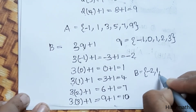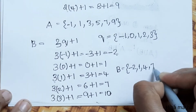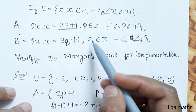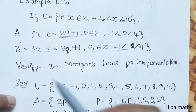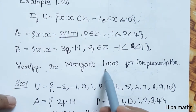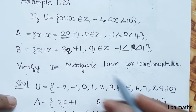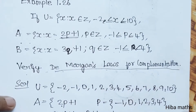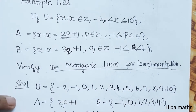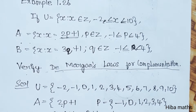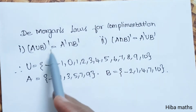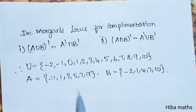Now, let's verify De Morgan's Law for Complementation. We can solve it using sets A and B. De Morgan's Law for Complementation gives us two laws to verify.